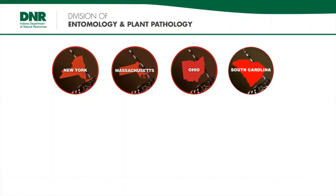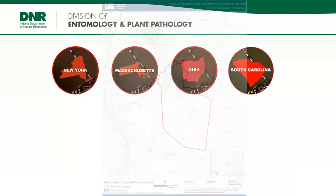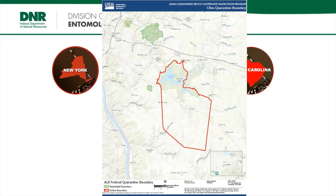ALB has been found in several areas over the last 25 years, often accidentally introduced in wood packing material. It was first discovered in the U.S. in 1996 in Brooklyn, New York. Currently, areas in New York, Massachusetts, Ohio, and South Carolina have active ALB quarantines and eradication efforts. In 2011, a population was discovered in Clermont County, Ohio, just east of Cincinnati, where eradication efforts have been successful in two outlier populations and continue in the main area. The eradication of this beetle is possible — introductions in Illinois, New Jersey, and parts of New York have been successfully eradicated.